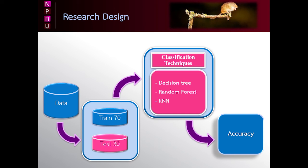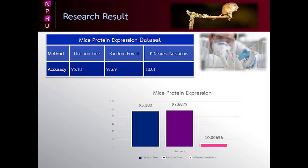And the last step: Evaluation model. We have tested classification techniques and report the results in terms of the classification accuracy. This is the research results. In this chart shows the results of the classification accuracy from 3 classification techniques. The results show that random forest gives the best accuracy with 97.69%, while K-nearest neighbors provide the lowest result with 10.01%.